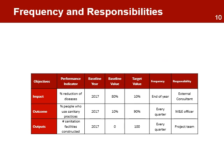The last column of the performance measurement framework includes information on the frequency of the data collected for each indicator and the person or groups responsible for collecting and reporting on the data. The performance measurement framework is used during all phases of the project: implementing, monitoring, evaluating, learning, adapting, and even re-planning.